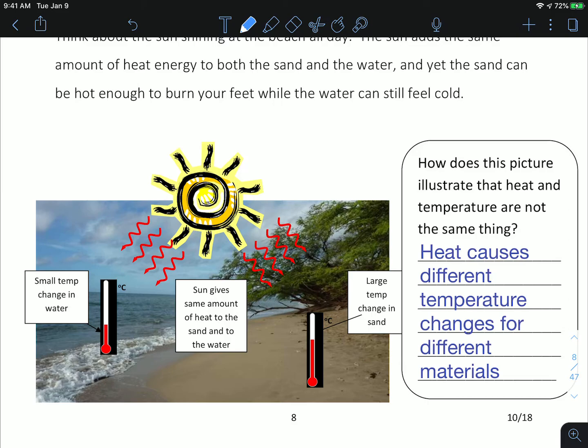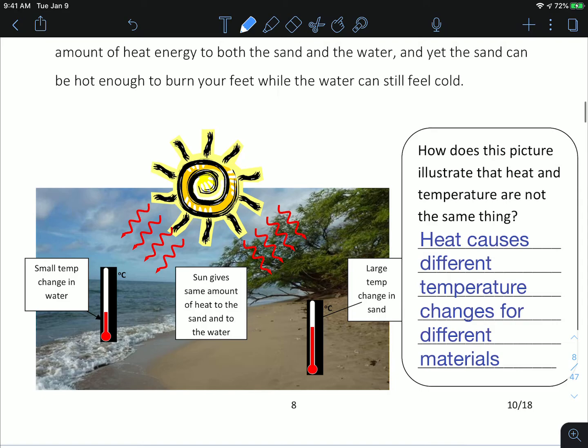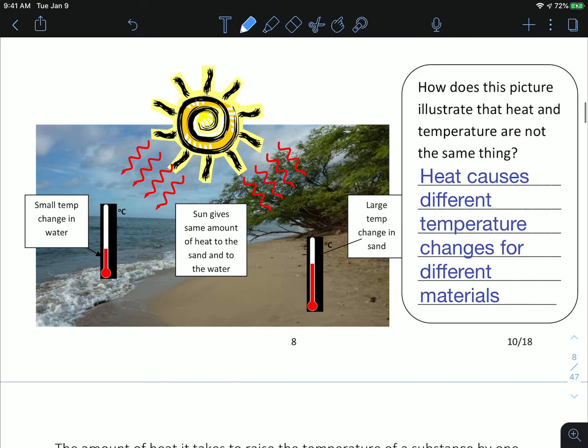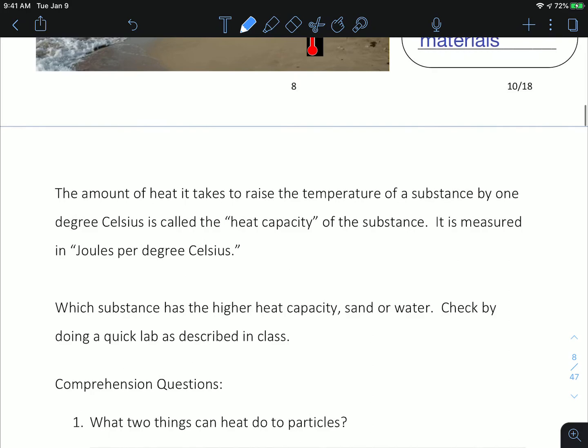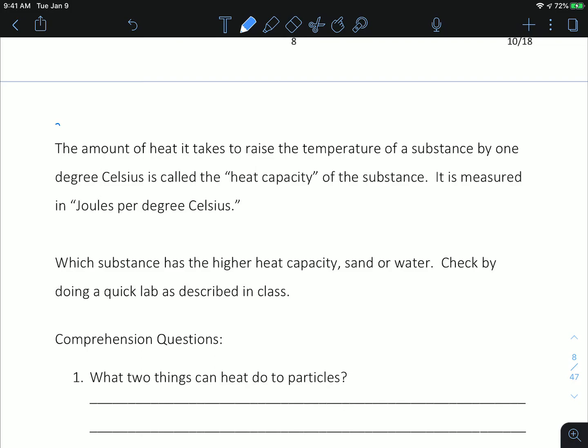The water can absorb that heat in a different way than the sand does. The sand seems to want to reflect the heat onto your foot, causing it to feel hot, while the water retains the heat. It doesn't share the heat with your body, so the water sort of absorbs the heat. Heat causes different temperature changes for different materials. There are lots of examples of this - we did the oven mitt as well, where the oven mitt is able to absorb the heat and not share it with your hand. The amount of heat it takes to raise the temperature of a substance by one degree Celsius is called the heat capacity.